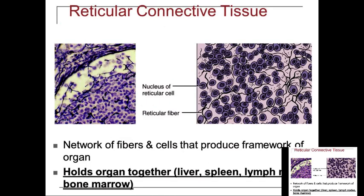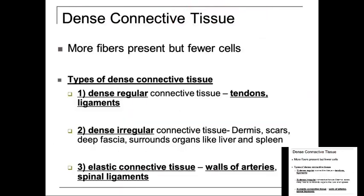Reticular connective tissue holds organs together like the liver, spleen, and lymph nodes. Dense connective tissue has more fibers present but fewer cells. The types of dense connective tissue are dense regular and dense irregular. Dense regular is found in tendons and ligaments. Dense irregular is found in the skin like the dermis, in scars, deep fascia, and surrounding organs. Elastic connective tissue is found around the walls of arteries and spinal ligaments.